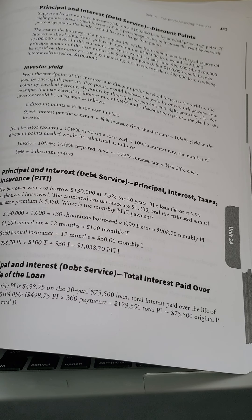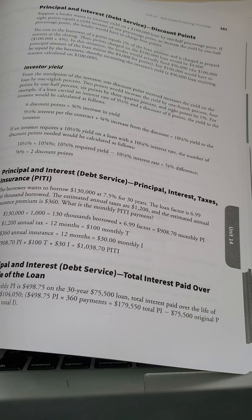What is your PI payment? $908.70. 130 times 6.99 is $908.70. Okay, that is your PI — principal and interest — but the question is what is your PITI?